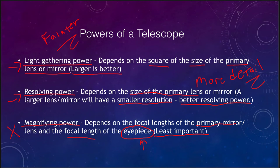If you see a telescope advertising its magnifying power, it might not be the one you want. If you're going to buy a telescope, you want to look for the biggest telescope you can afford and that you would reasonably use — one that is easy to set up and put down so you'll actually use it.